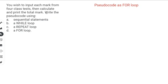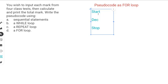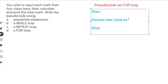Let's move on to the next construct: solving this problem using a FOR loop. Just like before, we always ensure that we start our algorithm and have a STOP. We declare our variables — reminder, this is not a required step for your exams but is very good practice. The data type will be real for 'test' and 'total' since marks can have decimals.